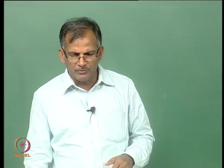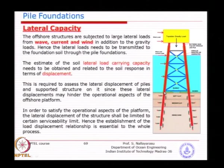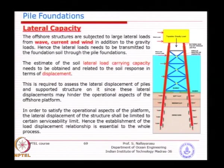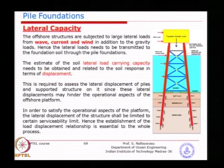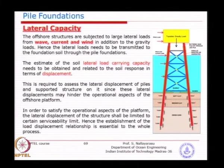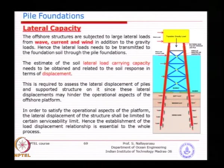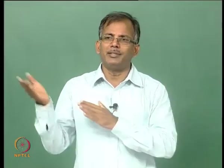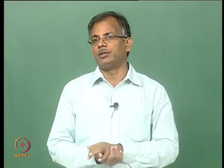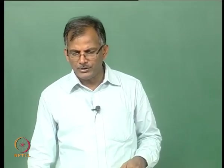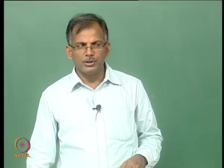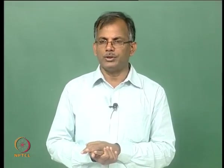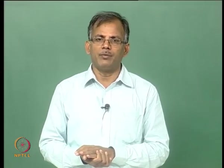In a typical offshore structure, the thumb rule is if you have 100 meters water depth, very easily your pile foundation is another 100 meters. But that does not mean 20 meters water depth means only a 20-meter pile — you will have at least 50 to 60 meters of pile foundation. Most shallow water structures ranging from 50 to 100 meters have pile foundations more than the depth of water or the jacket depth itself. You can see double the height of the jacket as the pile foundation length.